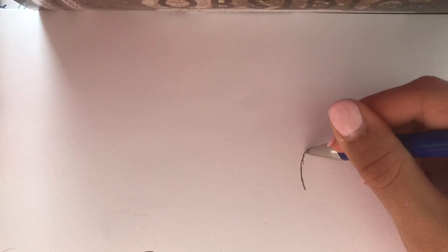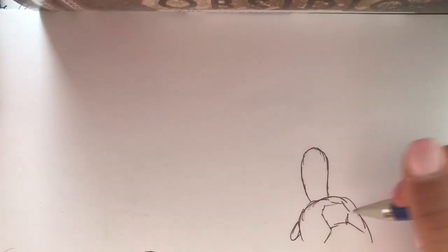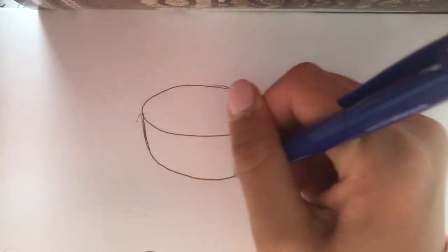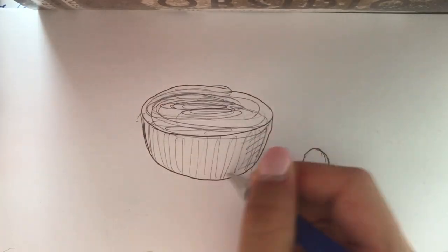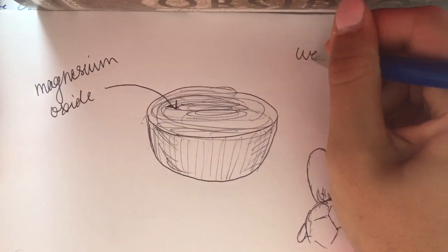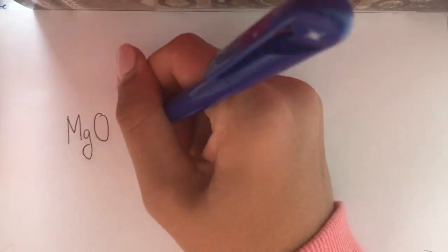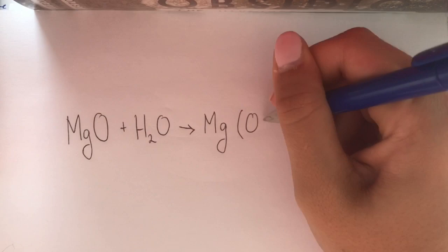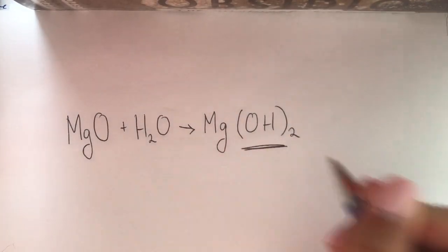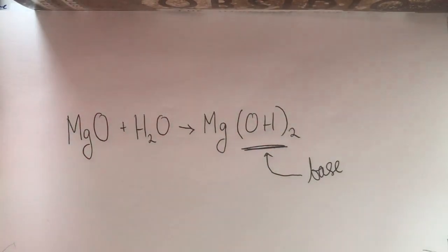Theoretically, we can figure out the results of the litmus paper test without even conducting the experiment. We know that magnesium oxide is a metal oxide, but it is also a basic anhydride, meaning that when the metal oxide reacts with water, a base is produced. Thus, the final solution should be basic.